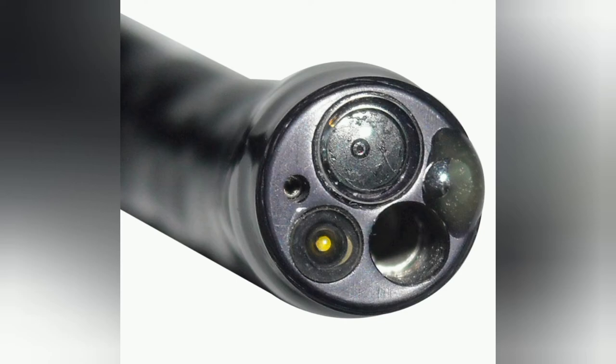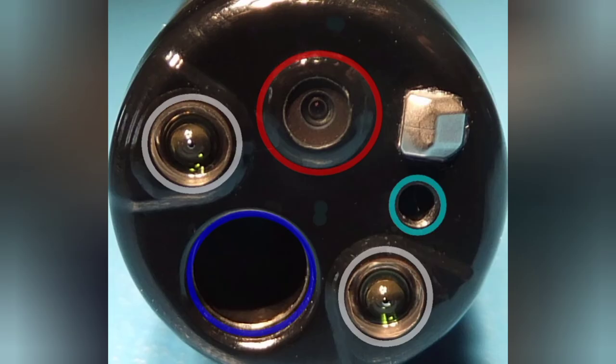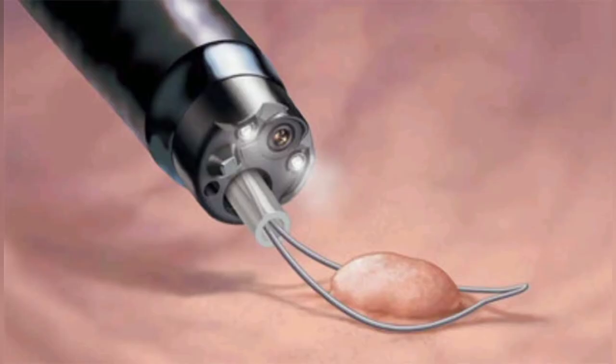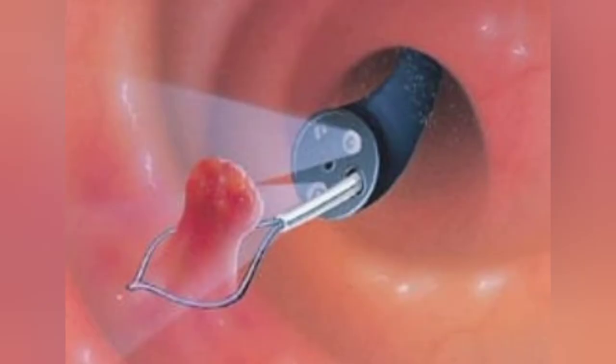Inside the tube of 10 mm diameter, flexible scopes enclose a water channel, light channel, camera lens, and air/water channel. If needed, an instrument channel is also enclosed inside the scope. All these components are fitted in very little space, so they are tiny — invisible to the naked eye — but work amazingly. Some flexible scopes contain a channel for tools used for biopsy, so a piece of defective tissue can be collected at the time of the procedure.